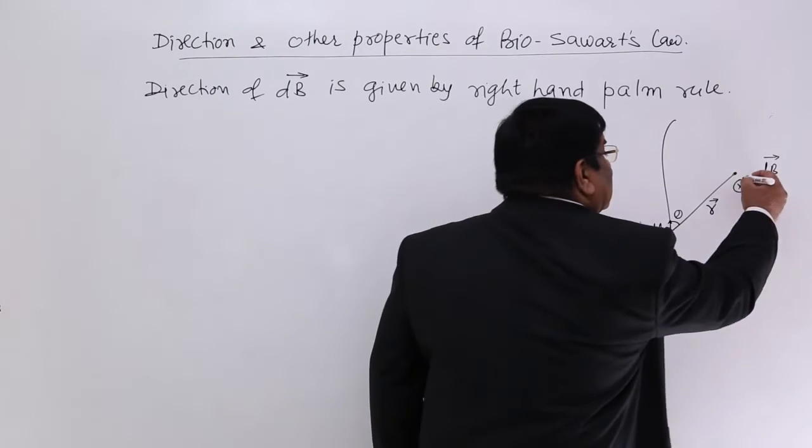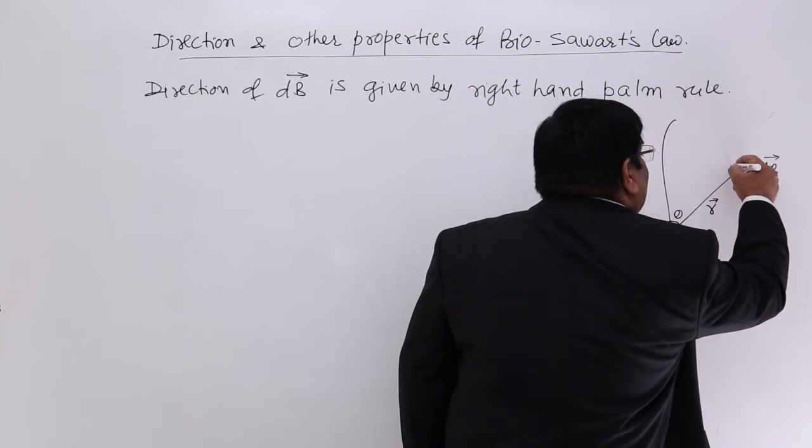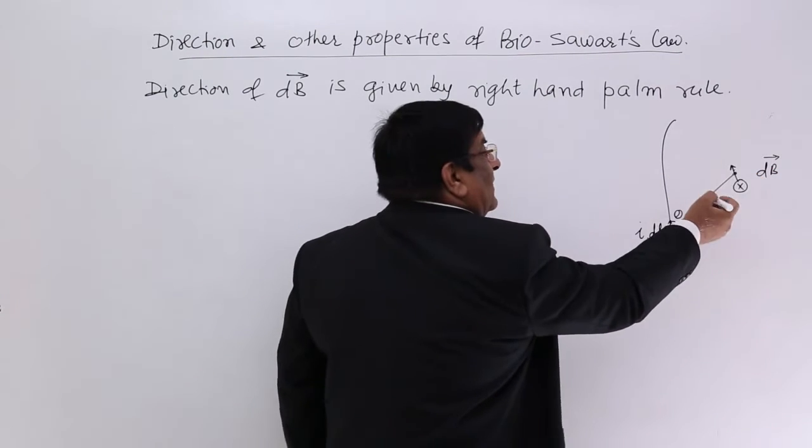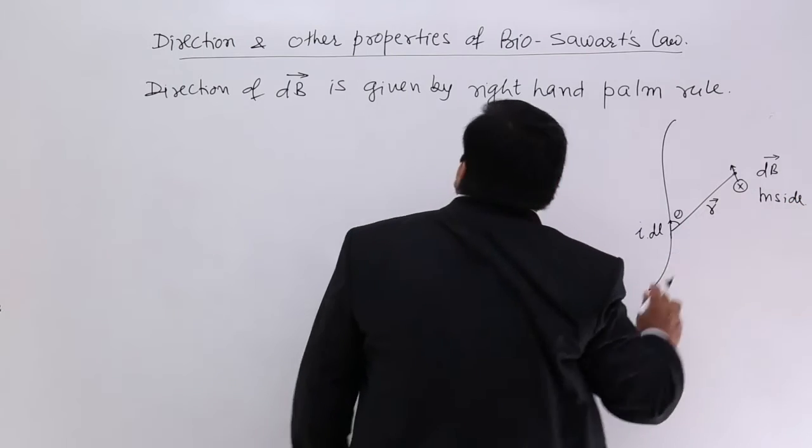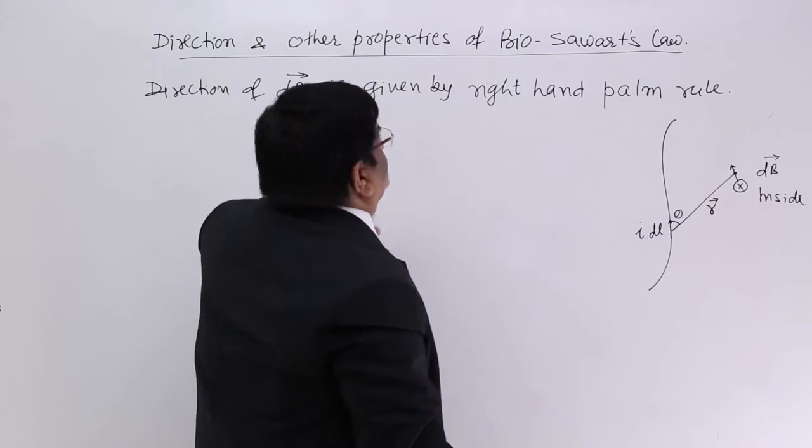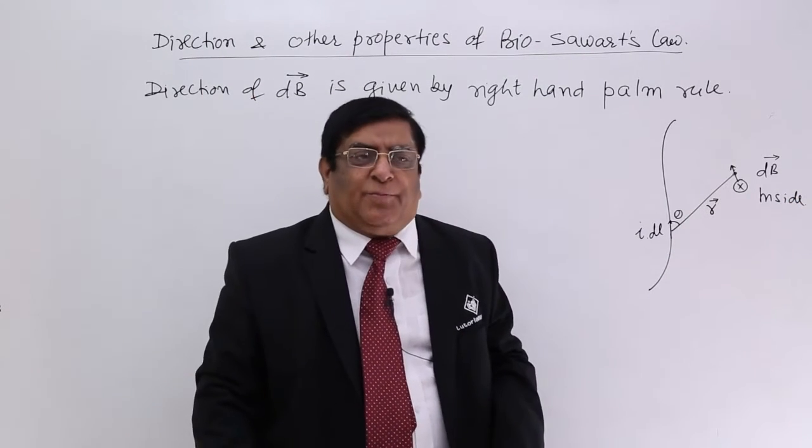So this I will mark as this is the direction of magnetic field going inside. So this is direction. There are certain other properties here.